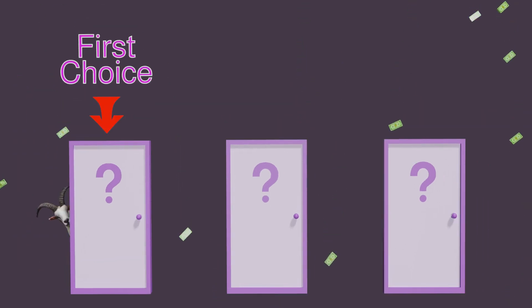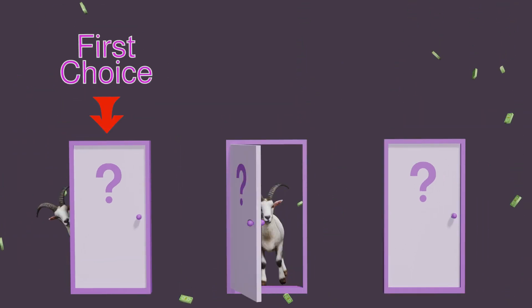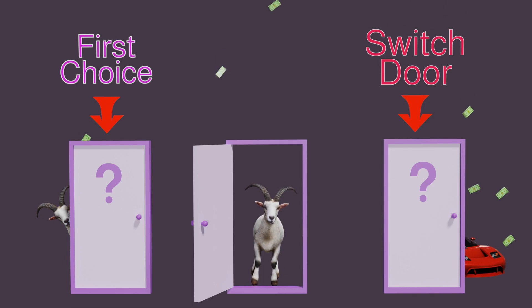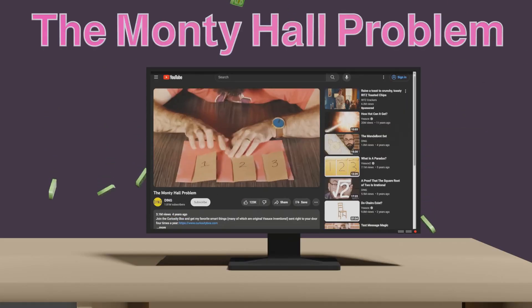Why doesn't anyone tell you that the door you first choose always contains the opposite item as the door you can switch to? The Monty Hall problem.